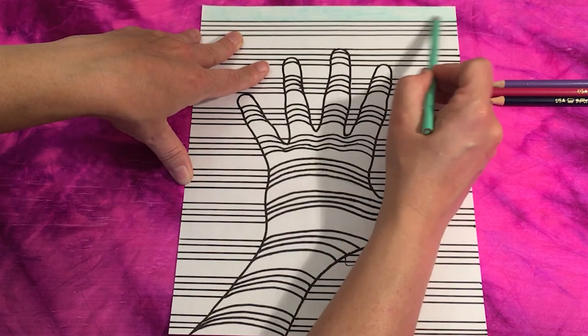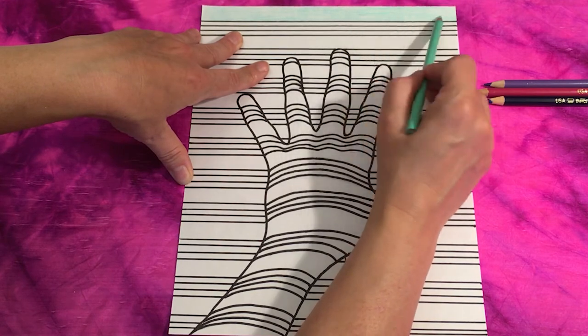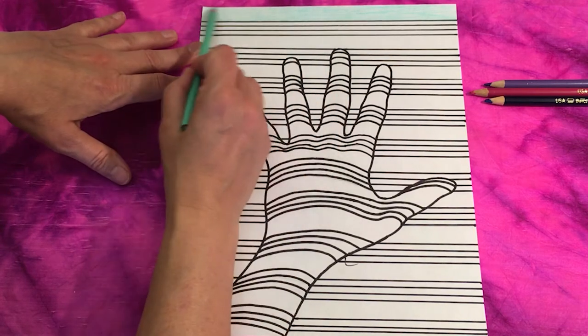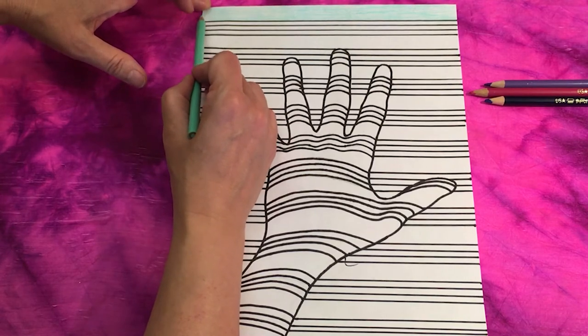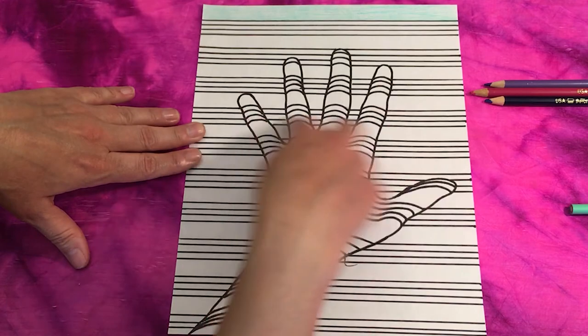So, try not to apply the most pressure here. Just a medium amount. And you're going to continue coloring your artwork with that amount of pressure all the way down through all of these lines.